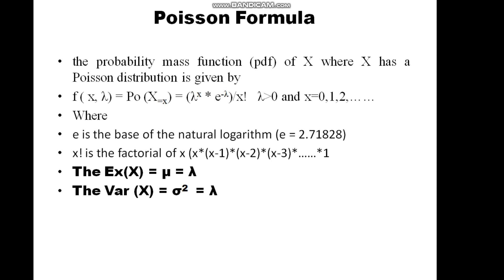Here, e is the base of the natural logarithm, equal to approximately 2.71828. x factorial is equal to x times (x minus 1) times (x minus 2) and so on down to 1. The expected value of this distribution is E(X) = mu = lambda, and the variance of the random variable X for the Poisson distribution is sigma squared, which also equals lambda.